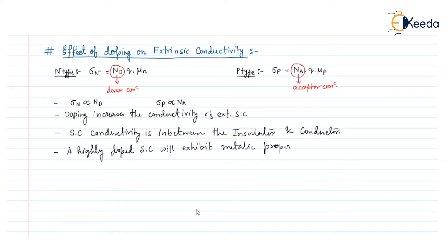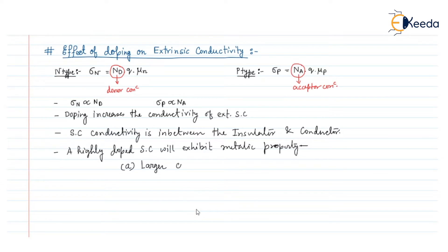When a semiconductor is highly doped, we can observe certain metallic properties. The first metallic property seen in a highly doped semiconductor is larger conductivity.